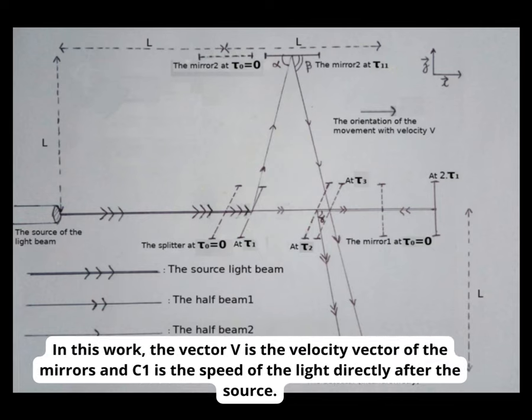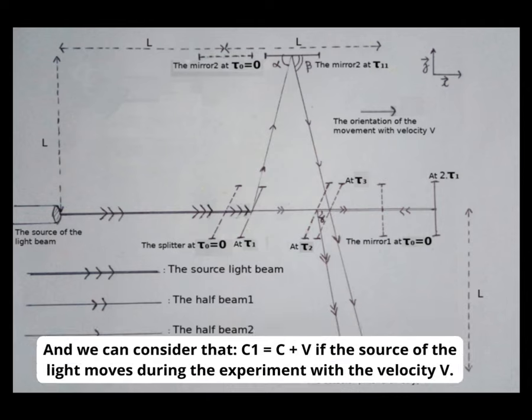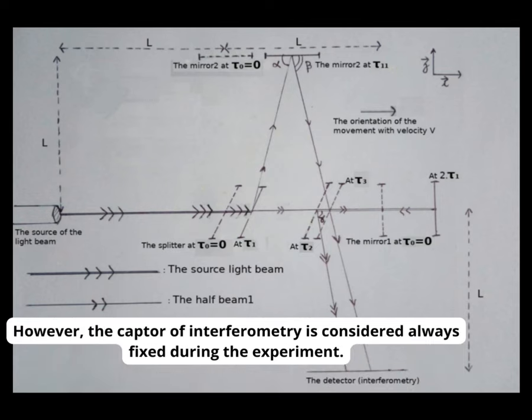In this work, the vector v is the velocity vector of the mirrors and c1 is the speed of the light directly after the source. We can consider that c1 equals c if the source of the light is fixed during the experiment, where c is the famous speed constant of the light. And we can consider that c1 equals c plus v if the source of the light moves during the experiment with the velocity v, however, the captor of interferometry is considered always fixed during the experiment.